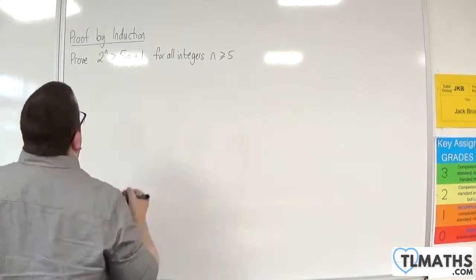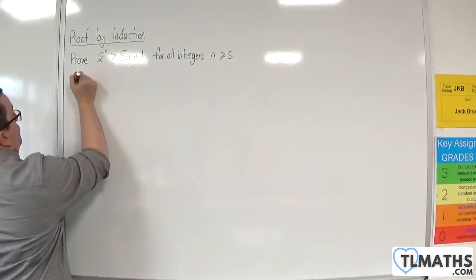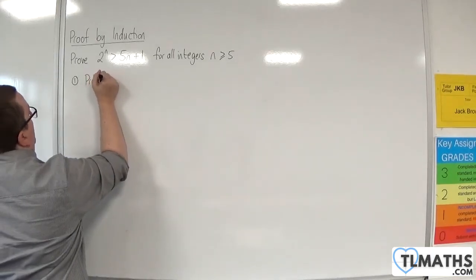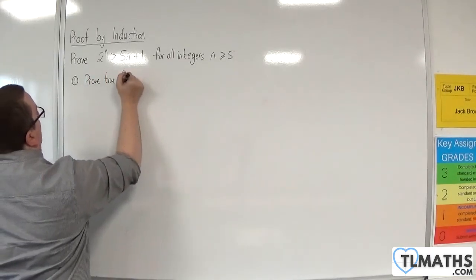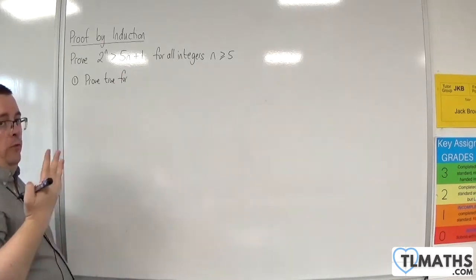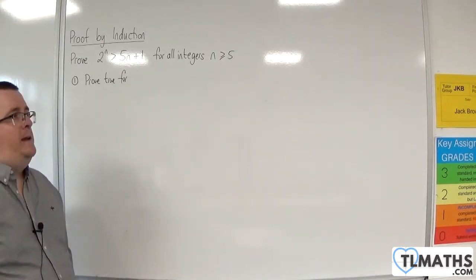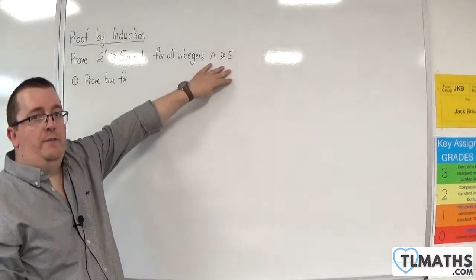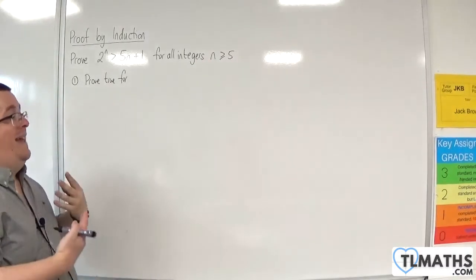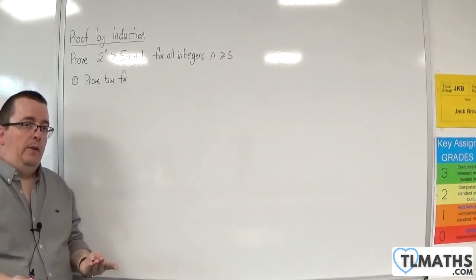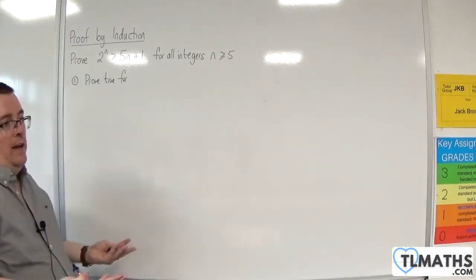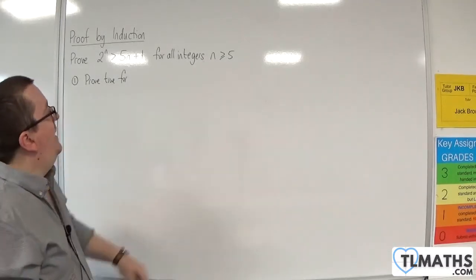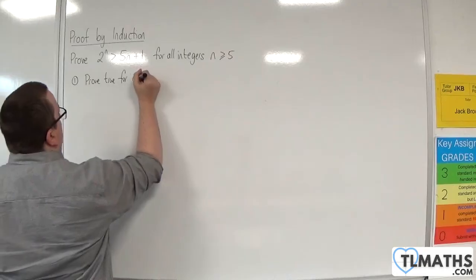Now, when we've been doing proof by induction previously, the first step is to prove that it is true for n equals 1, we usually do. But in this case, we need to start with n equals 5. We refer to it really as the base case. So usually it is n equals 1, but it doesn't have to be. In this case, it is n equals 5. So we prove true for n equals 5.